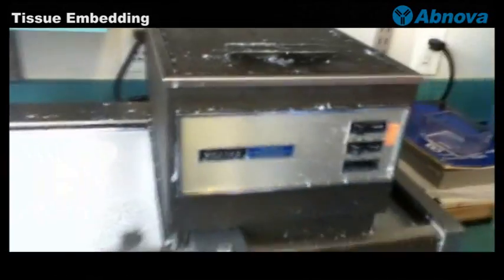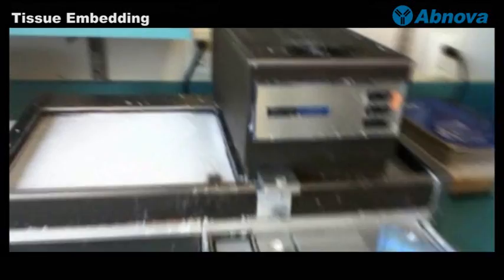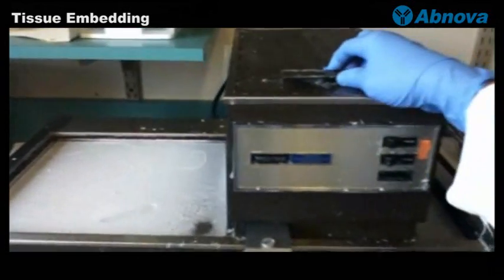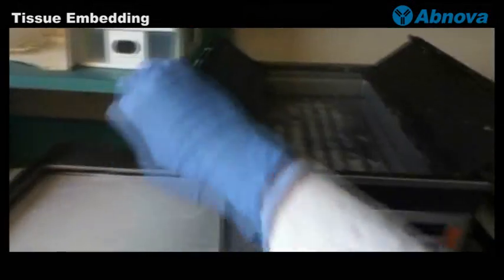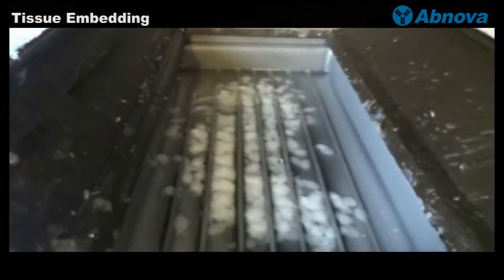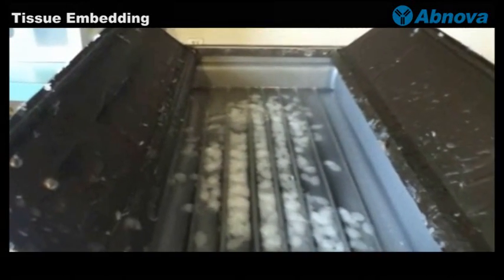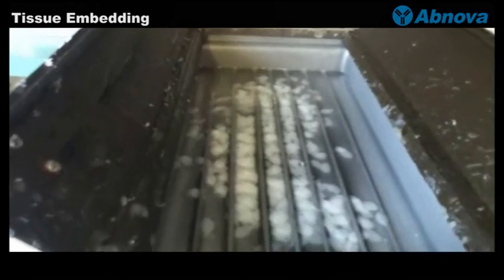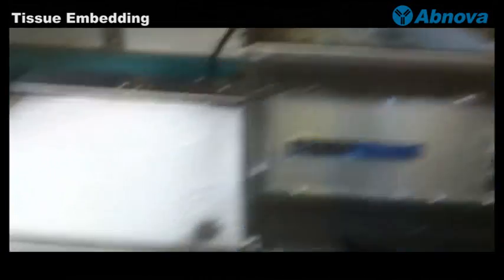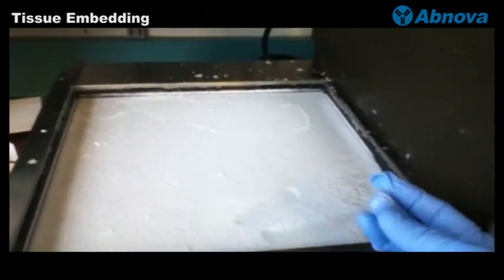We have to turn on the embedding machine so that the paraffin inside will start melting and the cold surface is cold enough.